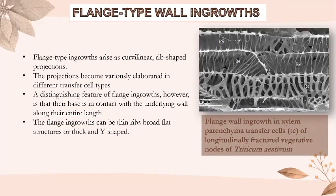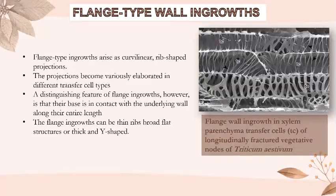Flange-type wall ingrowths arise as curvilinear, rib-shaped projections. The projections become variously elaborated in different transfer cell types. For example, flange wall ingrowths in xylem parenchyma transfer cells of Triticum aestivum.